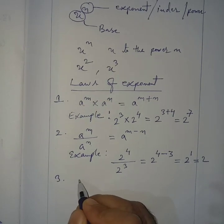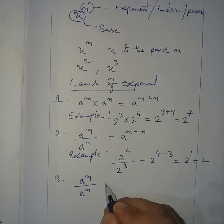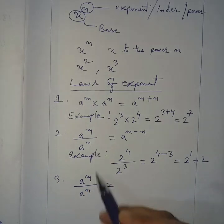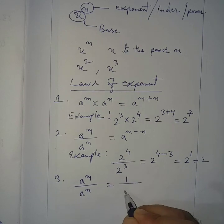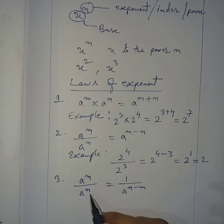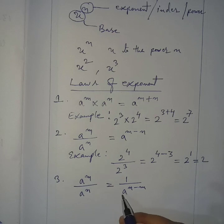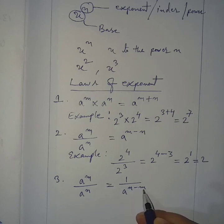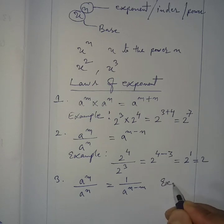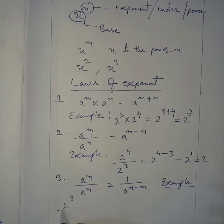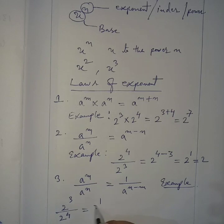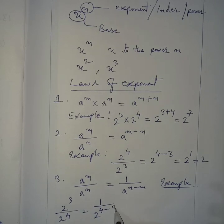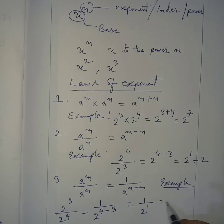Law number 3 is the alternate form of division: a^m ÷ a^n can also be written as 1 over a^(n−m) — that is, the denominator's power minus the numerator's power. Example: 2 to the power 3 divided by 2 to the power 4 equals 1 over 2^(4−3) = 1 over 2^1 = 1/2.